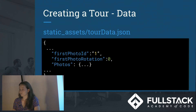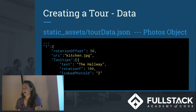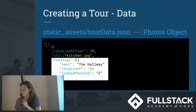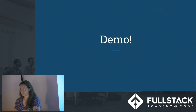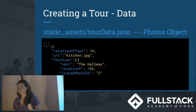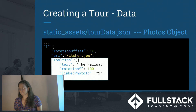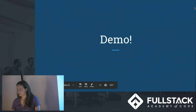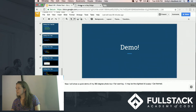We start with the first photo ID, and then there's a photo object containing all the other views. You just have to have the rotation, the location, and then connected information within the tooltips array. You can also put images in there — this one has a linked photo ID that will tell you to go to the next photo. You can also have 2D images and text attached.